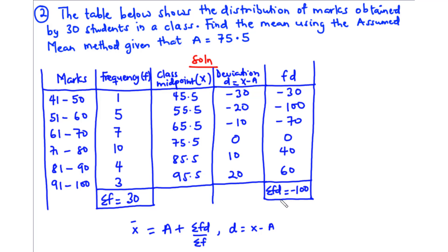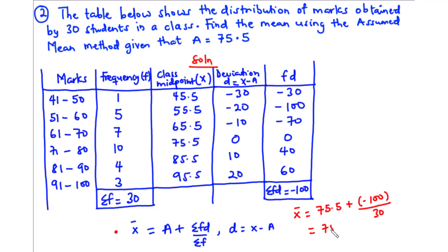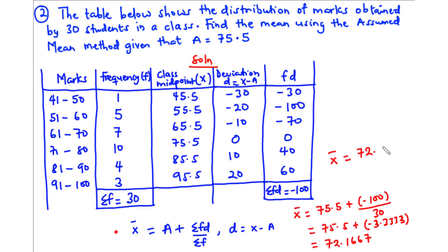To find the mean, substitute Σfd, Σf, and the assumed mean into the equation: x̄ = 75.5 + (−100 / 30). That gives 75.5 + (−3.3333) = 72.1667. So the mean is approximately 72.17. This is the actual mean for this distribution.